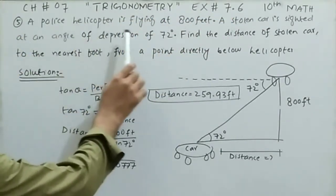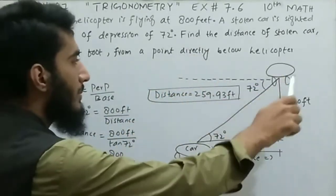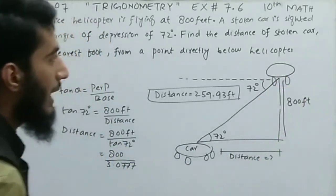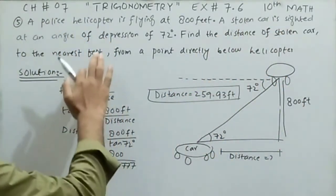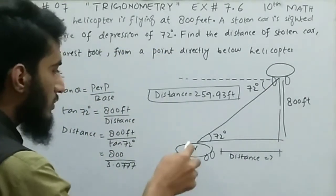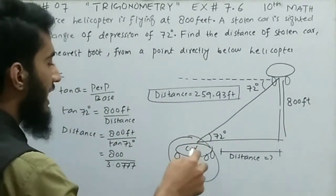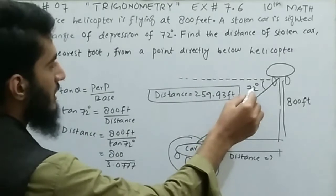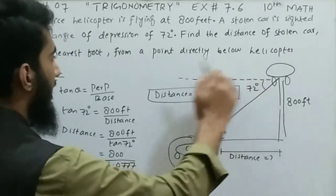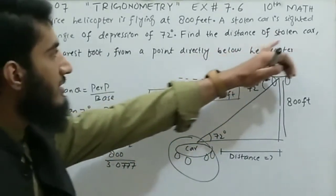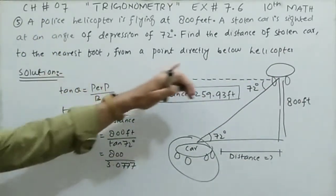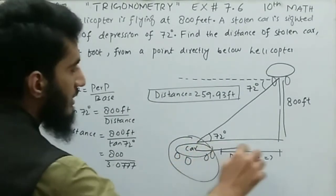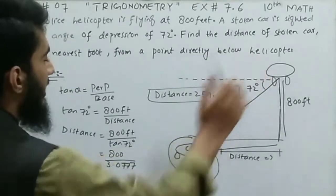Question number 5: A police helicopter is flying at 800 feet. A stolen car is sighted at an angle of depression of 72 degrees. Since it is an angle of depression, we take 72 degrees from the helicopter downward. Find the distance of the stolen car to the nearest spot from a point directly below the helicopter.